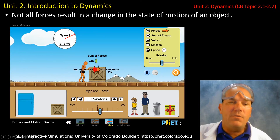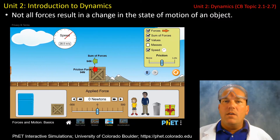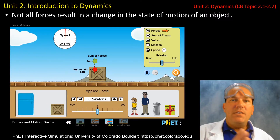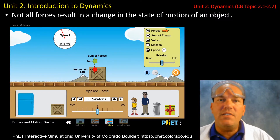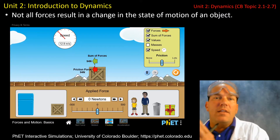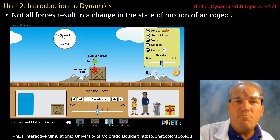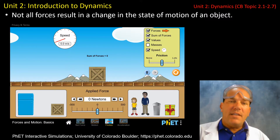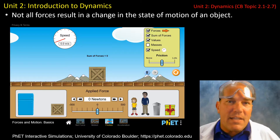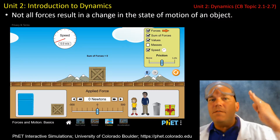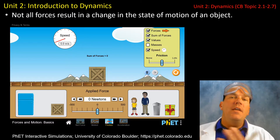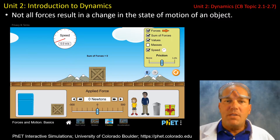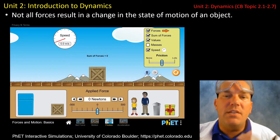I'm going to stop applying this force. Let's see what happens — speed is decreasing, the crate is decelerating. There's a change in the state of motion; therefore, there must be some sort of net force acting on this crate. And it's not the man anymore — it's the force of friction that is opposing the motion. And now the crate has stopped; the crate's velocity is zero.